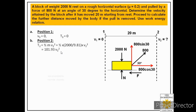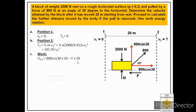Next, we find the work done on the block by the forces. The horizontal component of the external force acts in the direction of motion, so it does positive work. The friction force acts against the direction of motion, so it does negative work. Therefore, work done from stage 1 to stage 2, U12, equals 800 cos 30 times 20, minus F times 20, where 20 is the distance covered between the two stages.